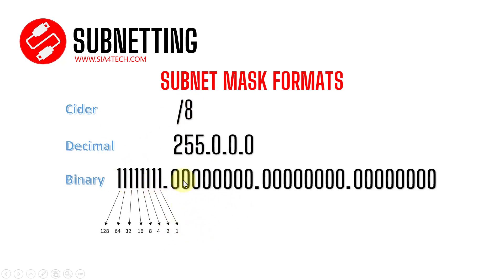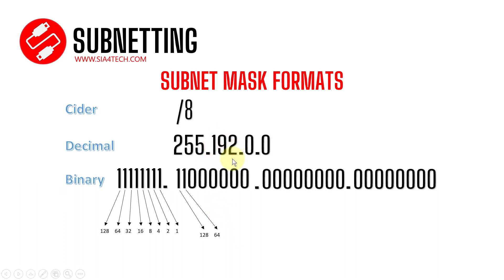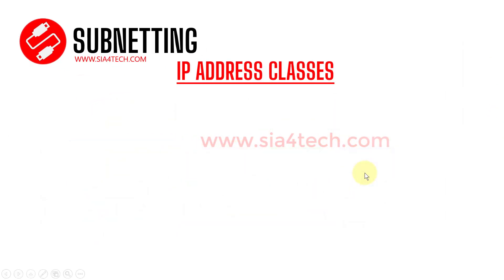For example, if I switch on two bits from the second octet — 128 and 64 are on — the sum is 192, and we put 192 in the decimal format. The CIDR also needs to change because we have eight bits plus two bits on, so in total we have 10 bits in CIDR format. This is how you compare between the subnet mask formats, which is essential for answering any subnetting question.